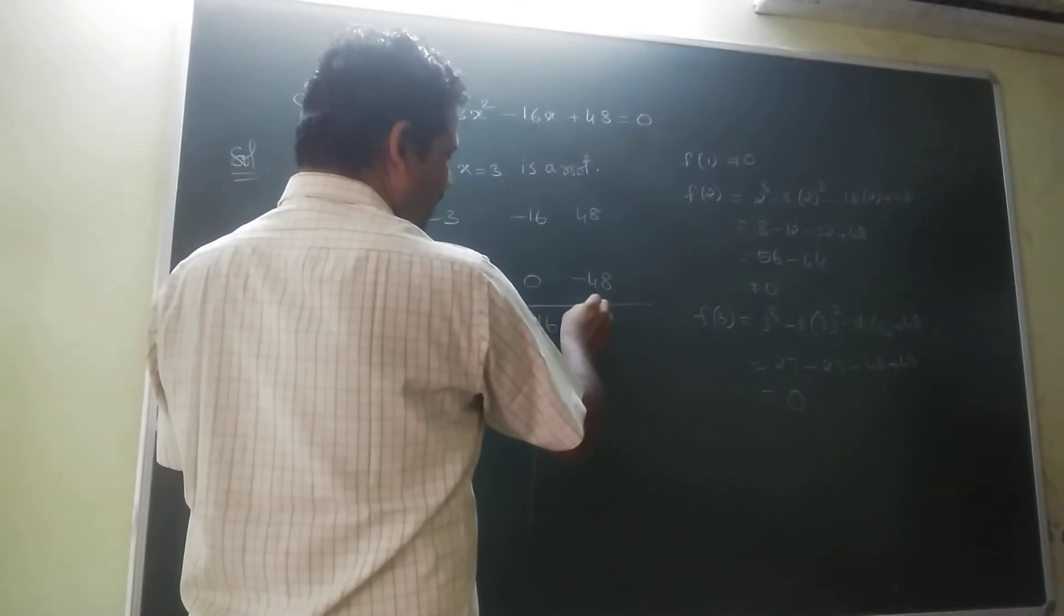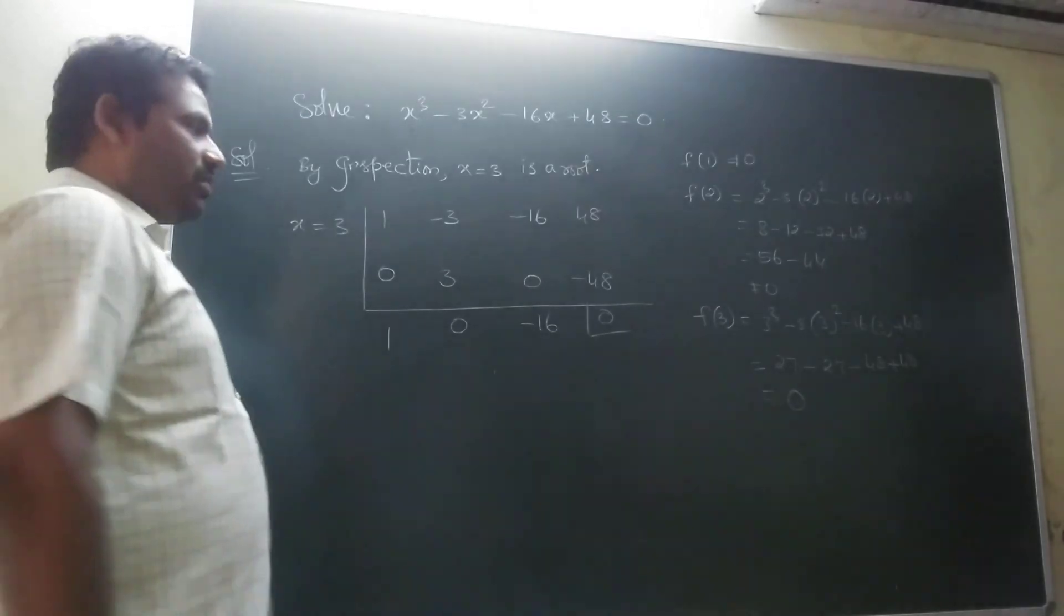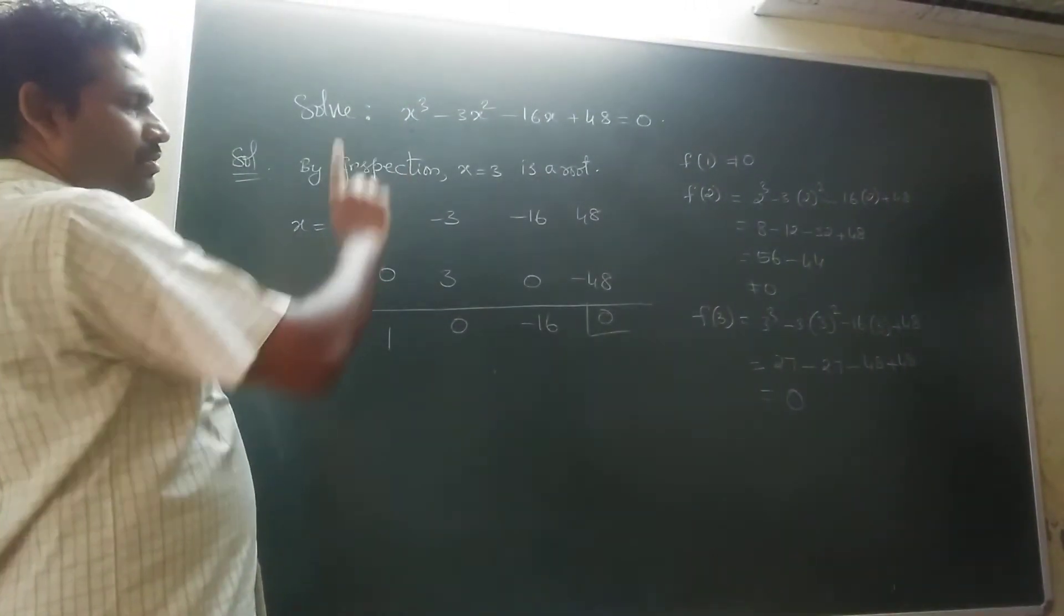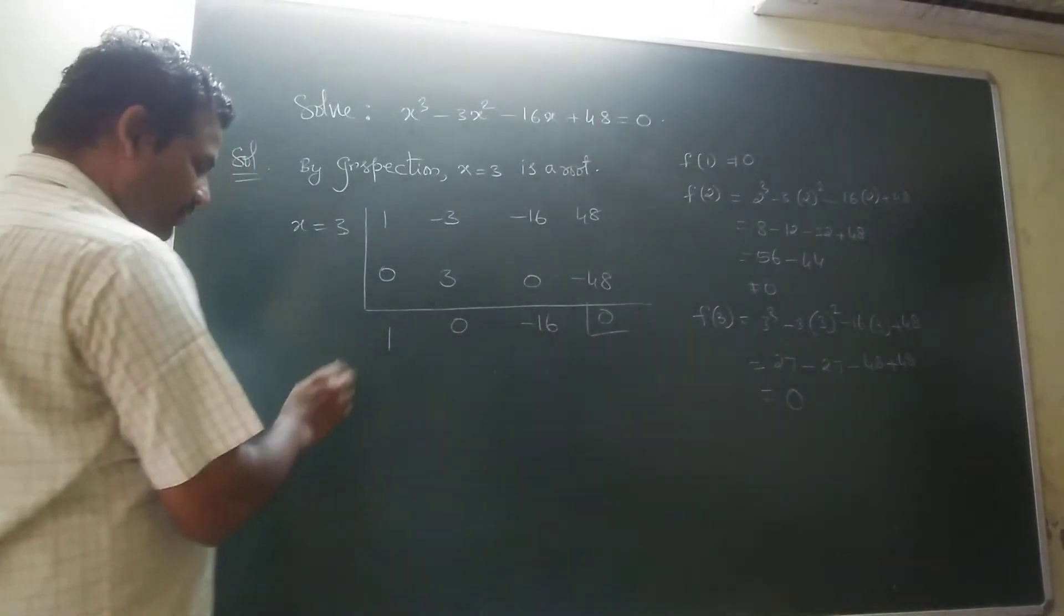48 minus 48 is 0. This is the remainder. When the remainder is 0, it means x equal to 3 is a root of that equation.